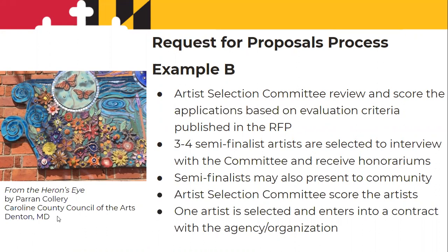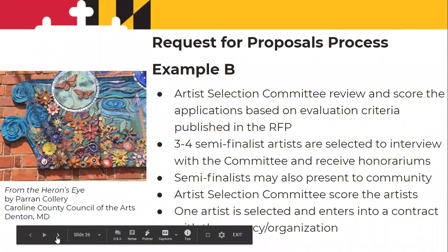The second example is what we call shortlisting. The artist selection committee reviews and scores the applications based on the criteria published in the RFP, but three to four semi-finalist artists are selected. They interview with the committee and receive honorariums for the proposal they submitted — it's like a competition award. Those semi-finalists might present to the community, since we encourage a public process. Then the artist selection committee meets to score the artists, one artist is selected, and enters into contract with the agency to implement the project.